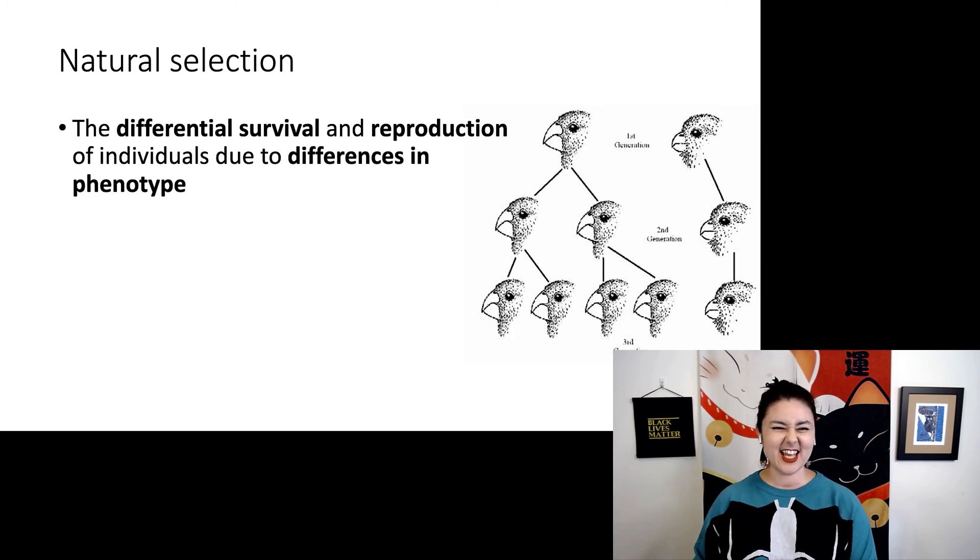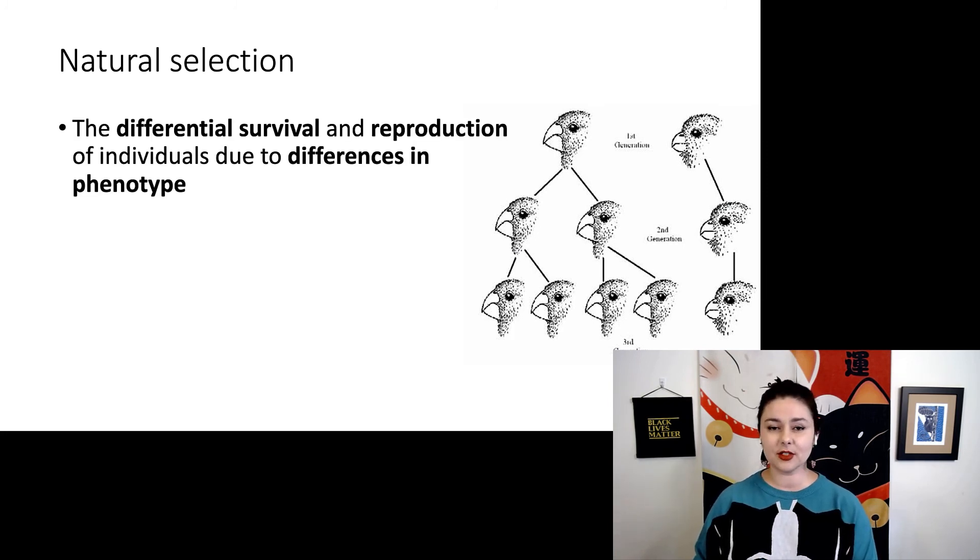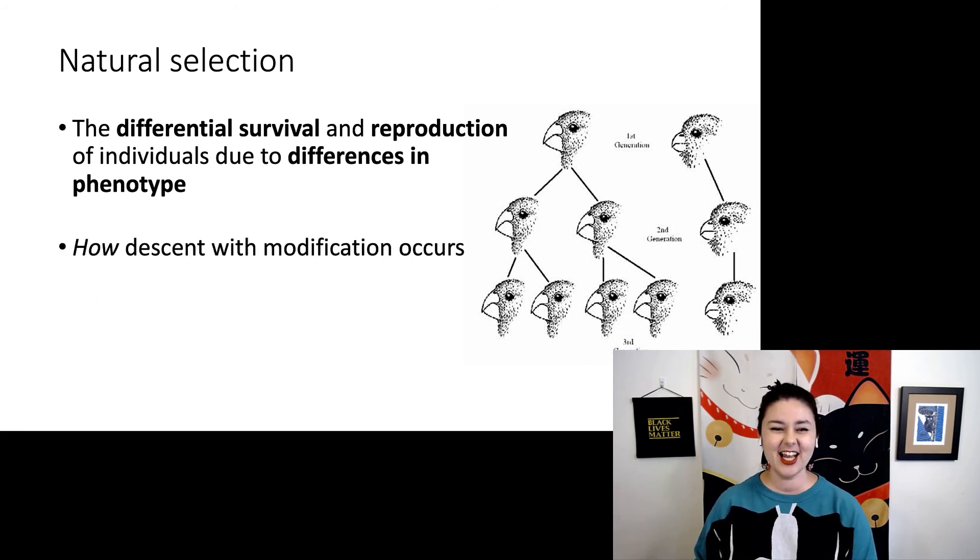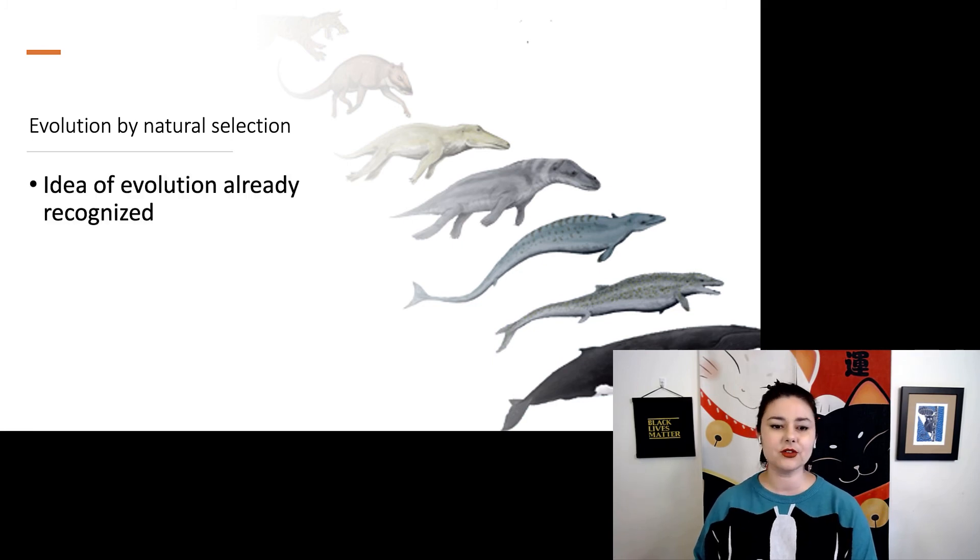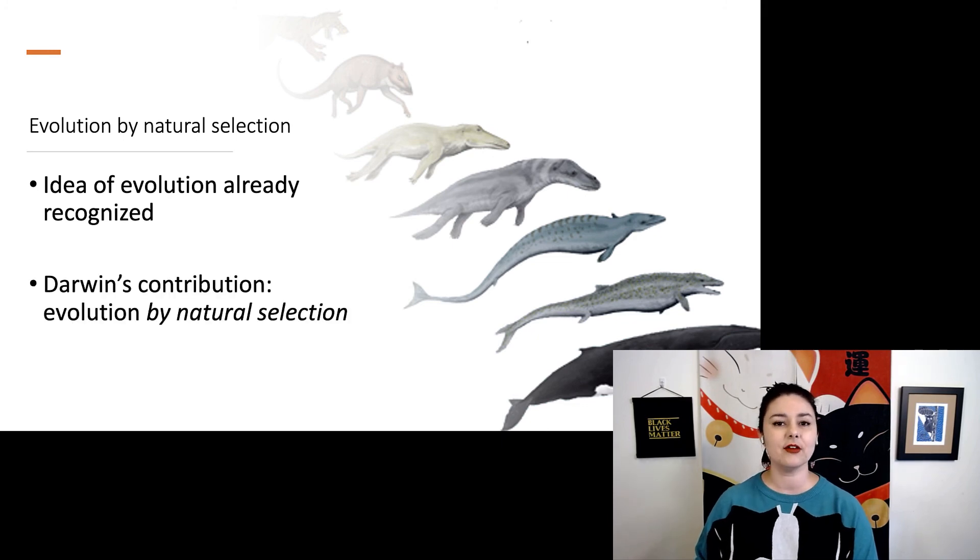So natural selection. This is the differential survival and reproduction of individuals due to differences in phenotype, or differences in how they look. This is how descent with modification occurs. And so you might hear some people refer to it as the mechanism for evolution. Evolution by natural selection. Remember, the idea of evolution was already recognized. Darwin didn't come up with that word. But what he did come up with was evolution by natural selection.